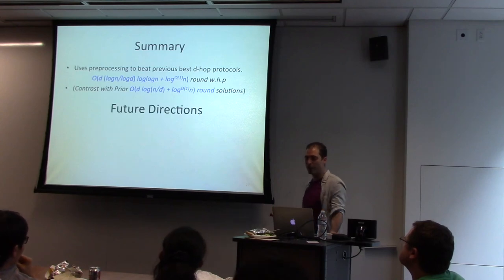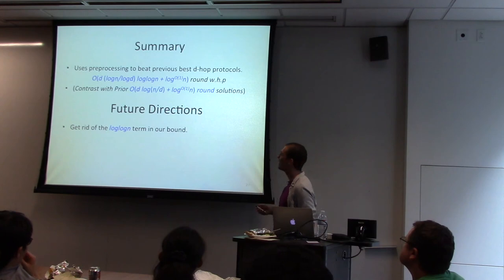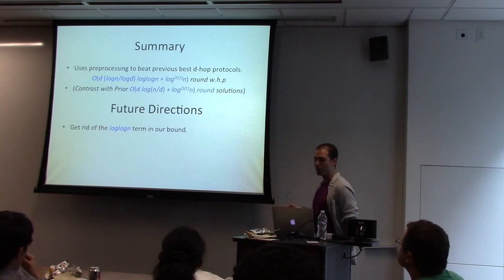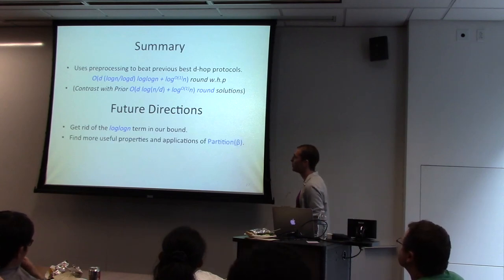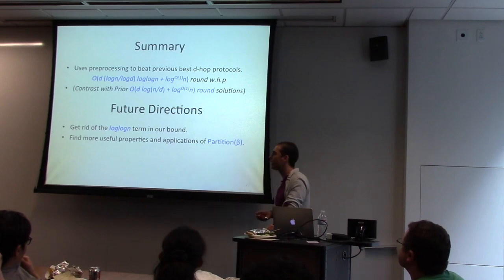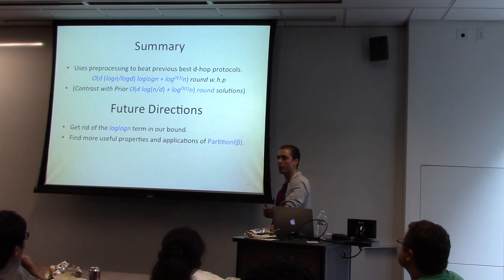Some future directions: we'd like to shave off the log log N term to get D log N over log D, which is both easier to read and probably closer to the truth. More interestingly, it'd be nice to find other interesting properties and applications of partition beta. Since its publication, the Miller-Peng-Xu algorithm has found applications in hopsets, spanners, and parallel computing.